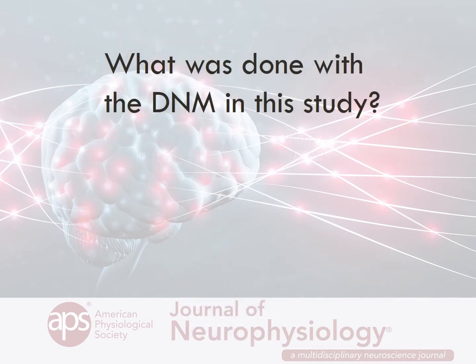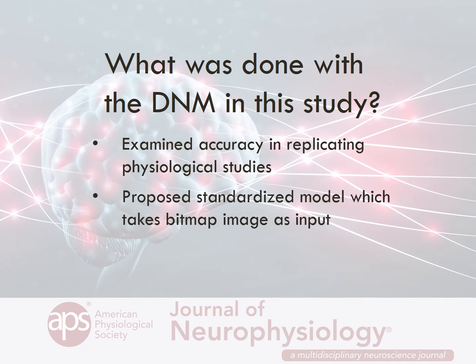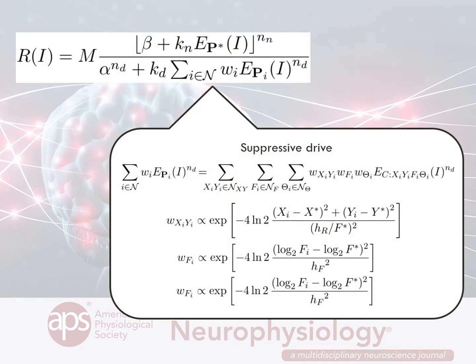So what did you do with the divisive normalization model in the study? We reviewed the studies of V1 neurons and tested how well the model could emulate the physiological results reported in those studies. We proposed a standardized mathematical formulation of the divisive normalization model and implemented it as computer software whose input is a bitmap image. This allowed us to apply the model to diverse visual stimuli and to discuss the model as a falsifiable scientific theory.